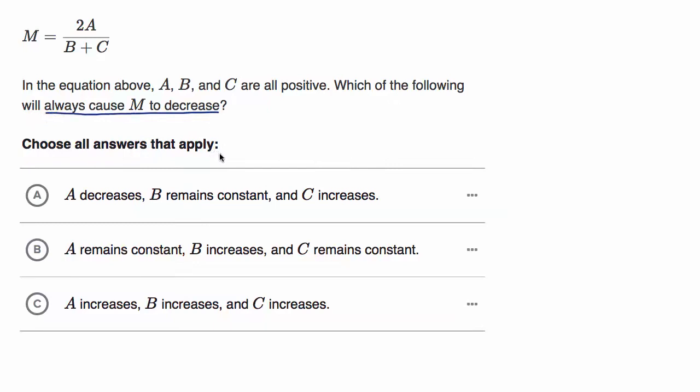Okay, now let's work through it together. There's a couple of ways to approach it. We could just go into the choices and see if they make sense. So choice A says A decreases, B remains constant, and C increases. We could try out some values for A, B, and C and change them the way this is talking about and see what that does to M. For all of these cases, let's start with A equals two, B equals two, and C equals two.